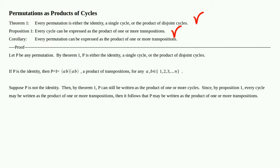Now suppose p is not the identity. Then by Theorem 1, p can still be written as the product of one or more cycles — the theorem says it's either the identity, a single cycle, or a product of disjoint cycles. So if it's not the identity, it can still be written as some product of cycles.